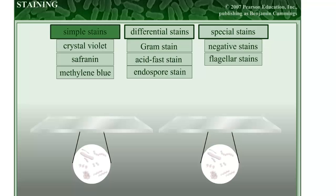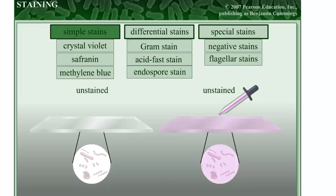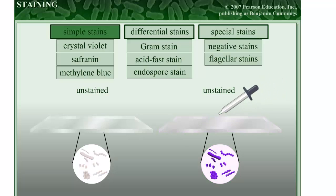Simple stains are made of a single basic dye that interacts with the biological sample and stains it. After treatment with the dye, the sample is rinsed with water, leaving the stained sample. Simple dyes are used to determine size, shape, and arrangement of cells.